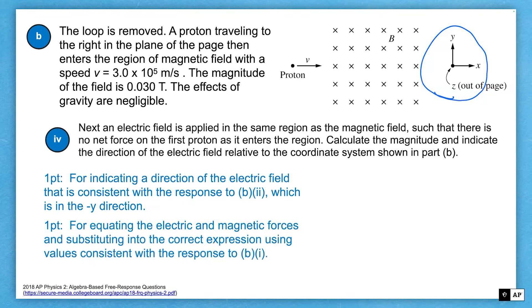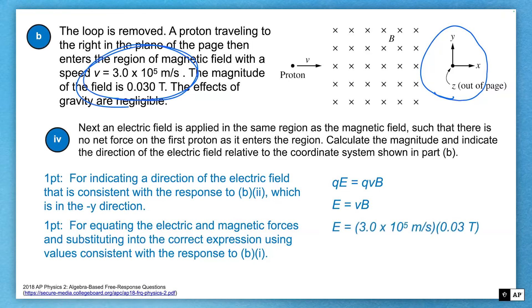And then for equating the electric force and magnetic forces, so that's my QE equals QVB. You'll notice my Qs cancel. And my E is equal to the velocity times the magnetic field, which is the information they give us up there. And then finally I multiply those two numbers together, and I get an electric field of magnitude 9,000 newtons per coulomb. Don't forget the little units there, 9,000 newtons per coulomb.